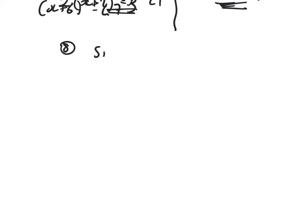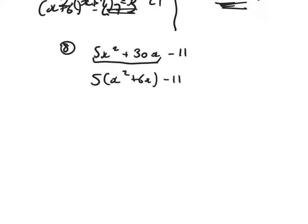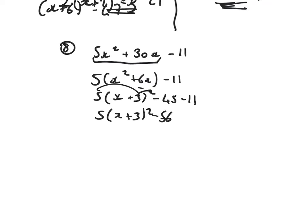Example 8: 5x squared plus 30x minus 11. Take out my numerical common factor of 5: bracket x squared plus 6x, close the bracket, minus 11. Half the 6 down to a 3, create a squared bracket with a 5 at the front. 3 squared is 9, times that by 5 is 45 — get rid of 45 and then take away 11. 5 bracket x plus 3 all squared minus 56.